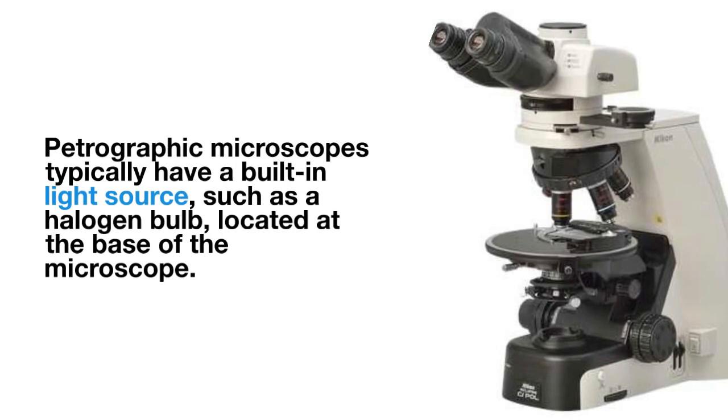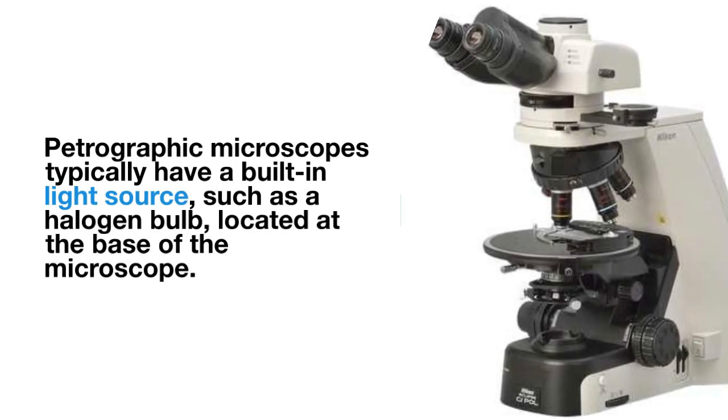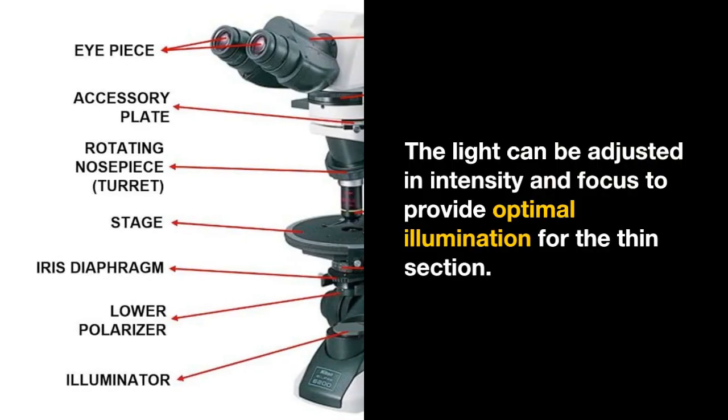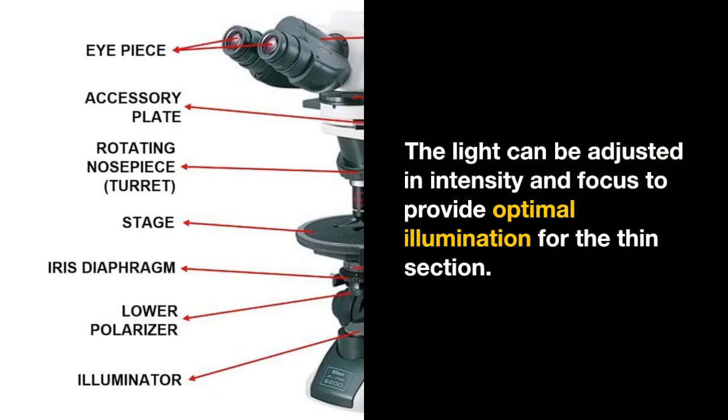Light source. Petrographic microscopes typically have a built-in light source, such as a halogen bulb, located at the base of the microscope. The light can be adjusted in intensity and focus to provide optimal illumination for the thin section.